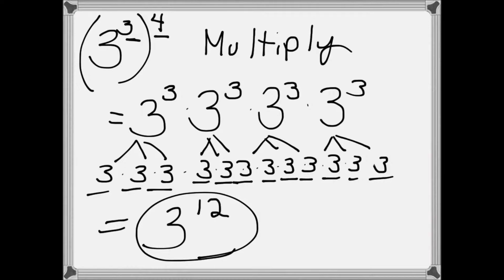If you look at this example we have 3 cubed to the 4th power. This means that we have 3 cubed 4 times. And so that's 3 to the 3rd times 3 to the 3rd times 3 to the 3rd times 3 to the 3rd.